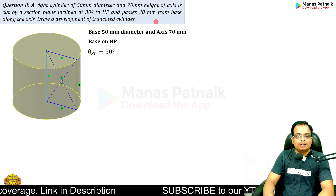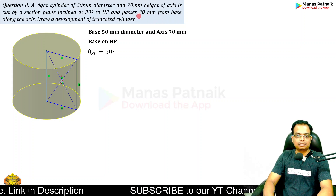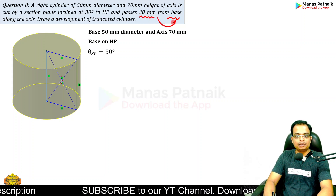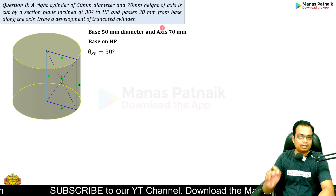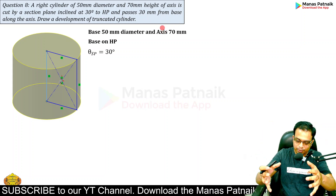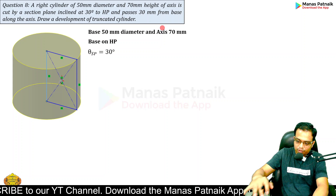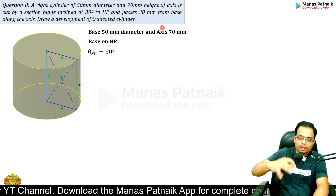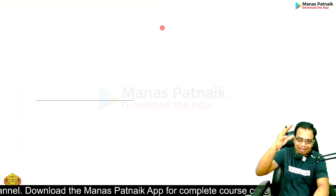The cutting plane is such that it passes the axis at a height of 30mm from the base — please remember this. Let's start. If the cylinder is resting with its base on the HP, the true shape of the base can only be seen from the top, and therefore we are going to kick off with the top view.